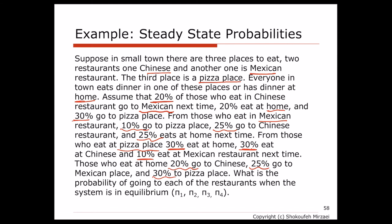We want to calculate the probability of going to each restaurant when the system is in equilibrium. In the long run, in steady state, if we pick any person in this city, what is the probability they are eating at home, at the Chinese restaurant, at the Mexican restaurant, or at the pizza place? Let pi 1 = probability of eating at home, pi 2 = Chinese, pi 3 = Mexican, pi 4 = pizza place.